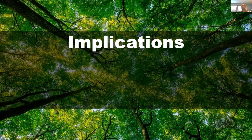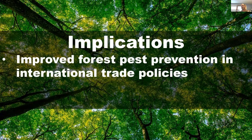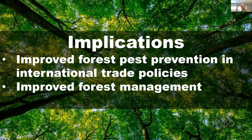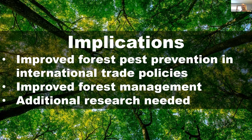There are real implications here for improved forest pest prevention and international trade policies. Carbon sequestration is only one argument — forest pest interdiction also involves biodiversity loss, economics, and human health. We also have implications for improved forest management, especially for native pests in the West, to ensure forests are resilient to pest outbreaks. Additional research is needed; the data is often not available or not at fine enough resolution to address many of these questions.